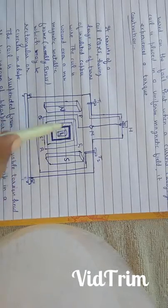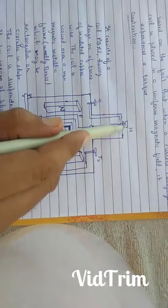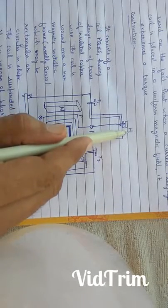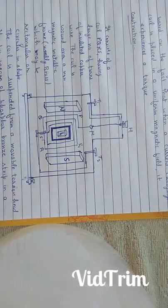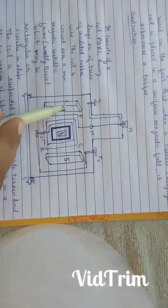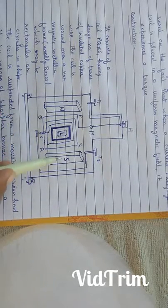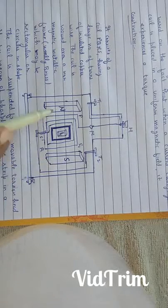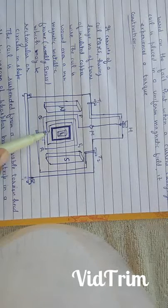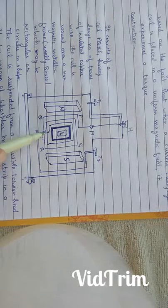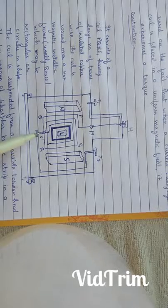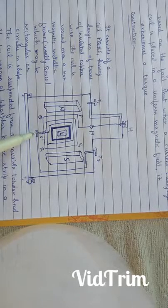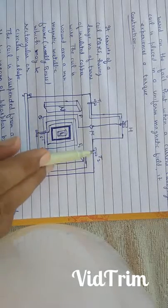This coil PQRS1 is suspended from a movable torsion head H by means of a phosphor bronze strip in a uniform magnetic field produced by two cylindrical pole pieces N and S. The lower end of the coil is attached to hairspring S dash. The other end of the hairspring S dash is connected to terminal T2.